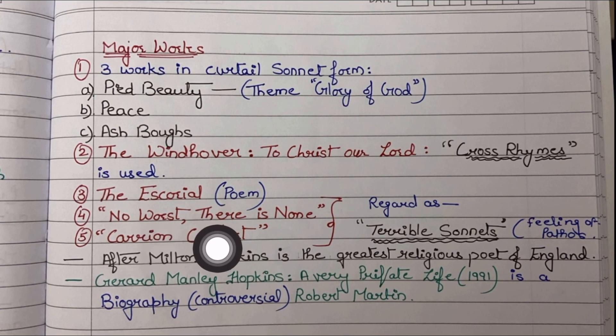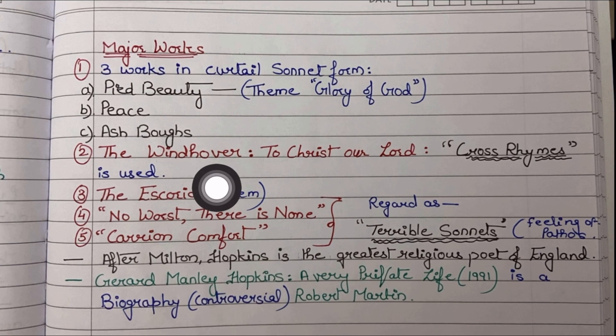To recap: two terrible sonnets are No Worst There Is None and Carrion Comfort. Three curtal sonnets are Pied Beauty, Peace, and Ash Boughs. The theme of Pied Beauty is the glory of God. Cross rhymes are used in The Windhover, subtitled To Christ Our Lord.